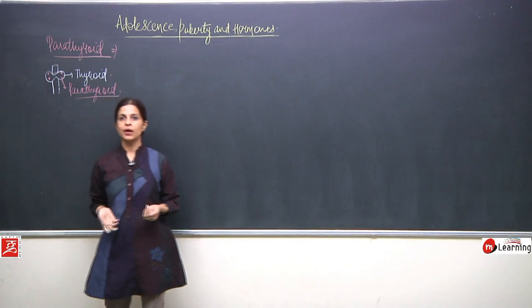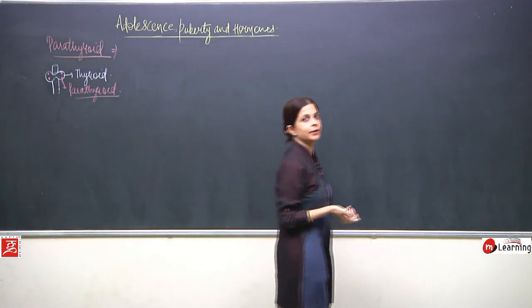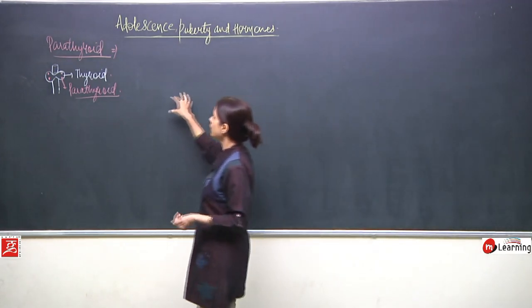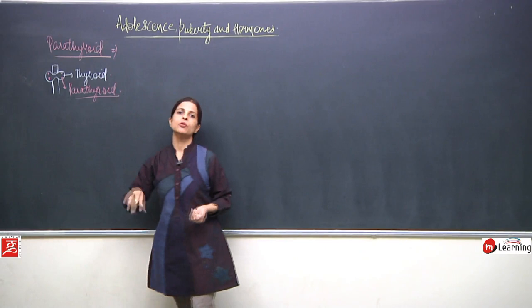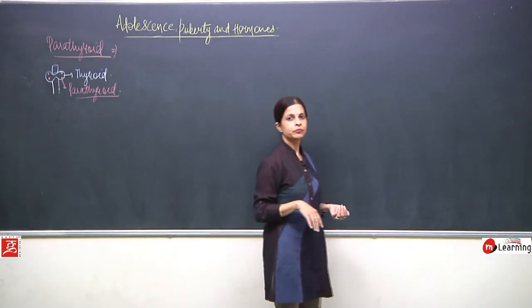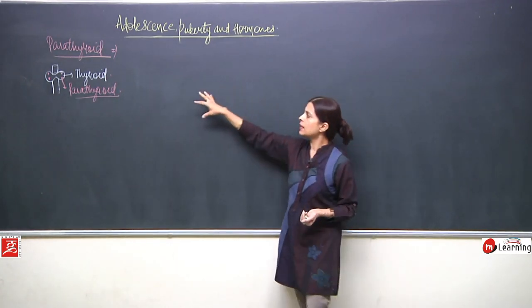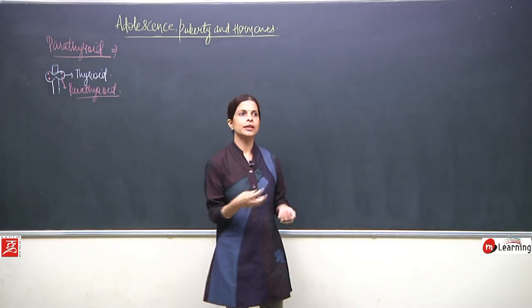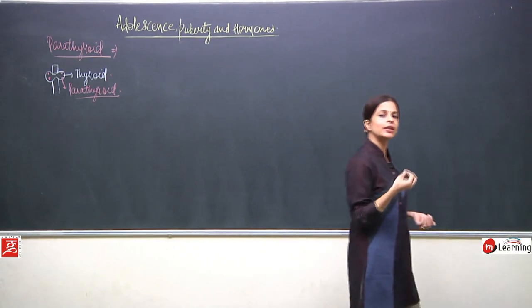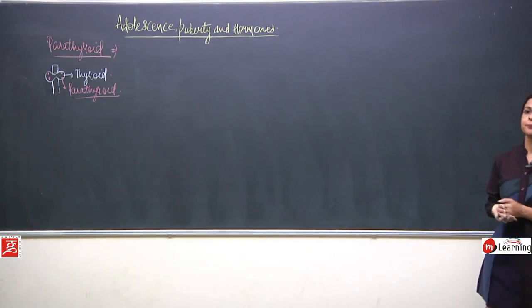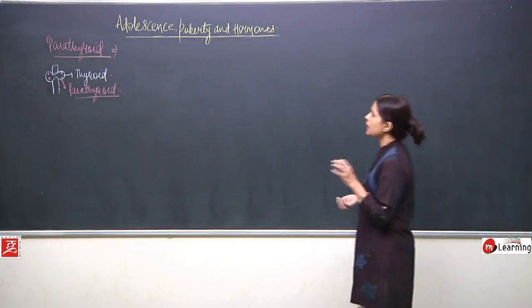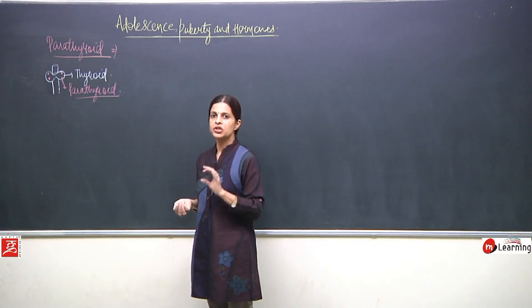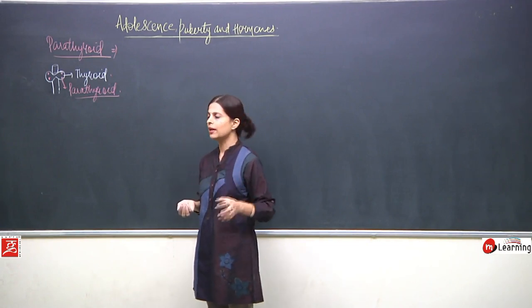What is the function of this parathyroid gland? It secretes a hormone known as parathormone, which regulates the level of calcium and phosphate in the blood. We will not be discussing parathyroid in detail — just finishing it in two or three lines.